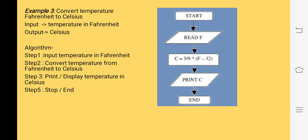In this example, we are converting temperature from Fahrenheit to Celsius using the formula: C equals 5 divided by 9 multiplied by (F minus 32). We will start our flowchart with the start box, then use Read F to input the temperature in Fahrenheit. We will use a processing box to convert the temperature from Fahrenheit to Celsius. After getting the result, we will print C with the help of the input-output box, and finally use END to indicate that we have completed the flowchart.